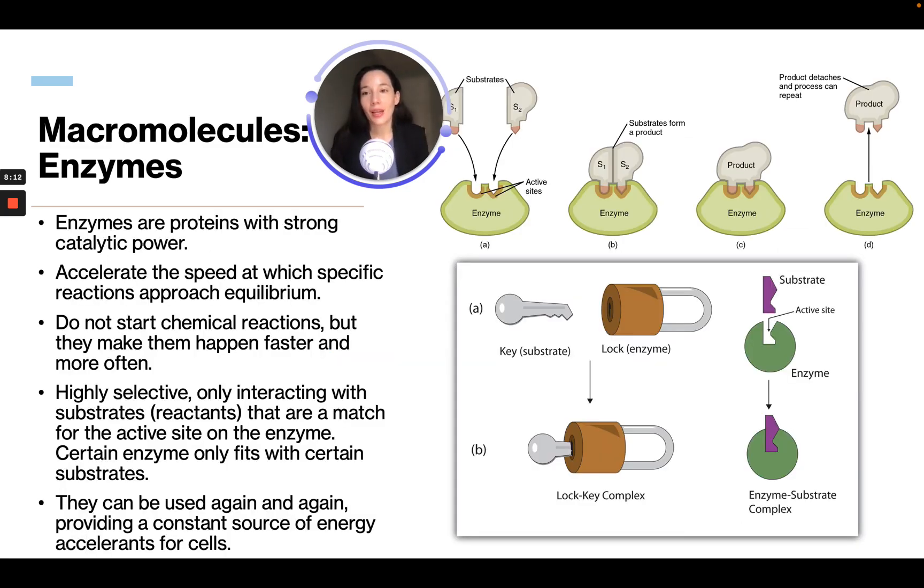Enzymes are proteins with strong catalytic power. They accelerate the speed at which specific reactions occur. They do not start chemical reactions, but they make them happen faster and more often. They're highly selective, only interacting with substances or reactions that are a match for the active site on the enzyme. Certain enzymes only fit with certain substrates, and they can be used again and again.